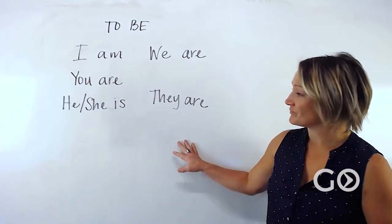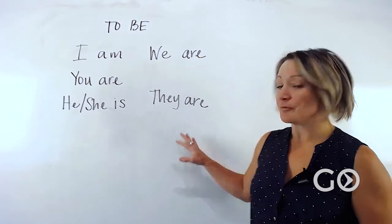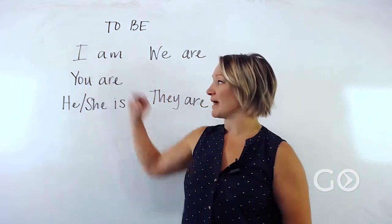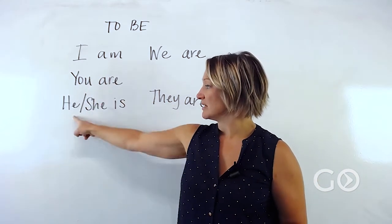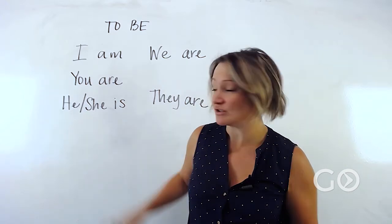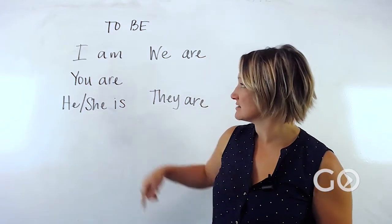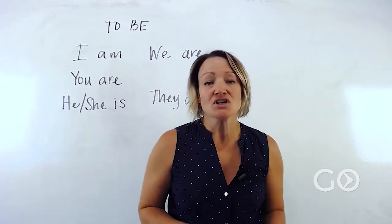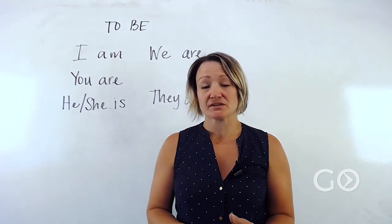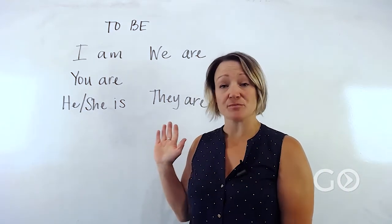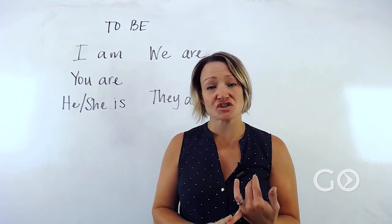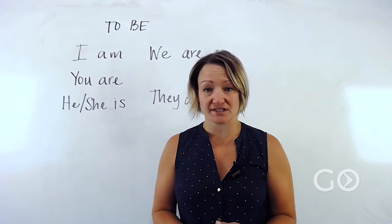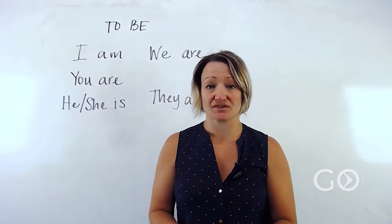Behind me, you will see I have the simple present tense use of the word 'to be.' So we have: I am, you are, he, she, or it — we can use 'there' too — it is, we are, and they are. In this video, we're going to learn how to use this in the present tense in a question form and in a negative form, and then we'll move on to learning some of the past tense uses.